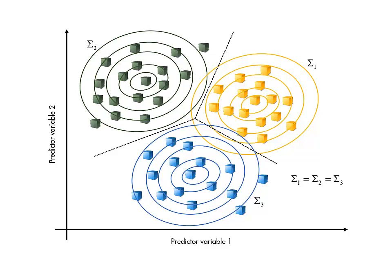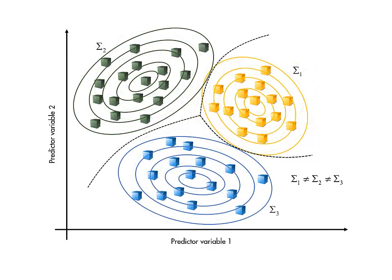However, linear boundaries are not appropriate for all problems. If we do not assume that the covariance matrices are the same for all classes, the boundaries turn out to be quadratic, and again the coefficients are determined by the mean vectors and covariance matrices of the observed classes.